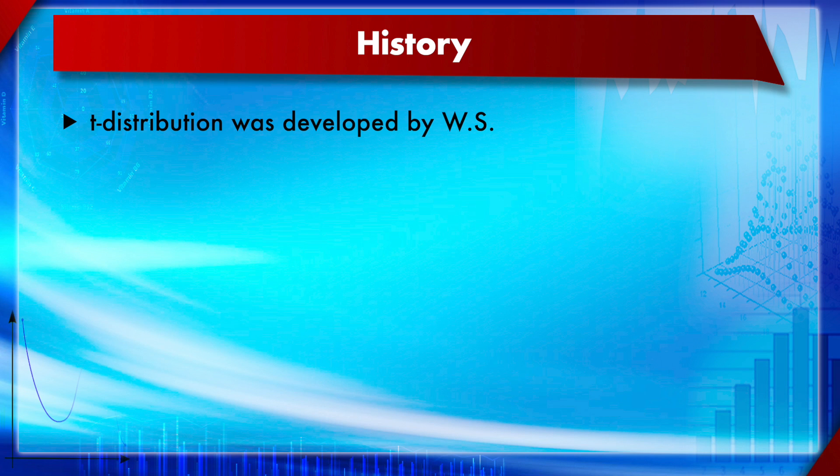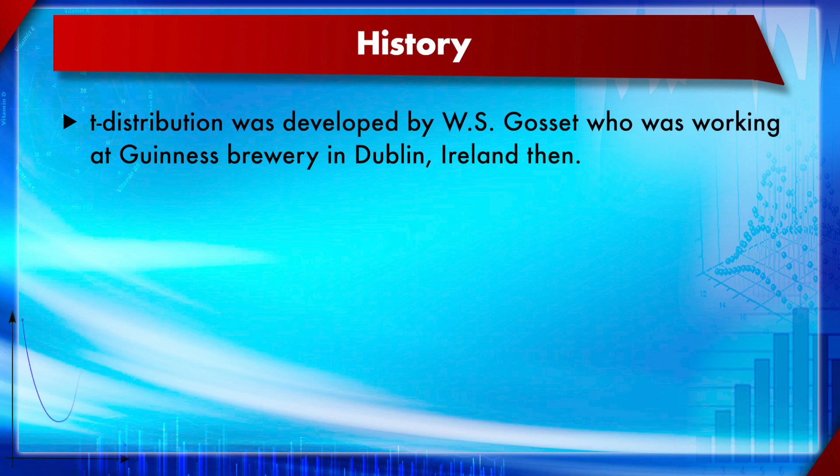The history is that the t-distribution was developed by W.S. Gossett. He was an English statistician working at the Guinness brewery in Dublin, Ireland.